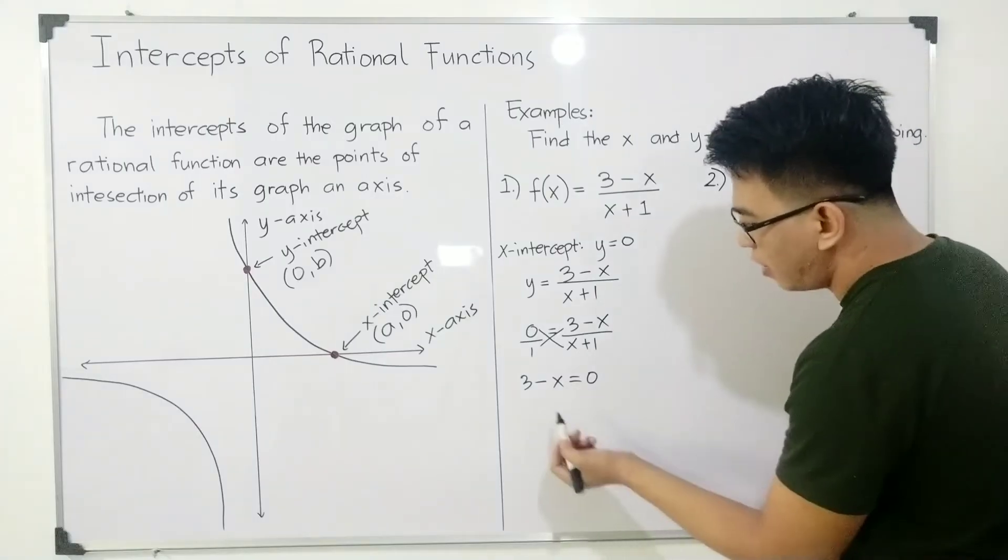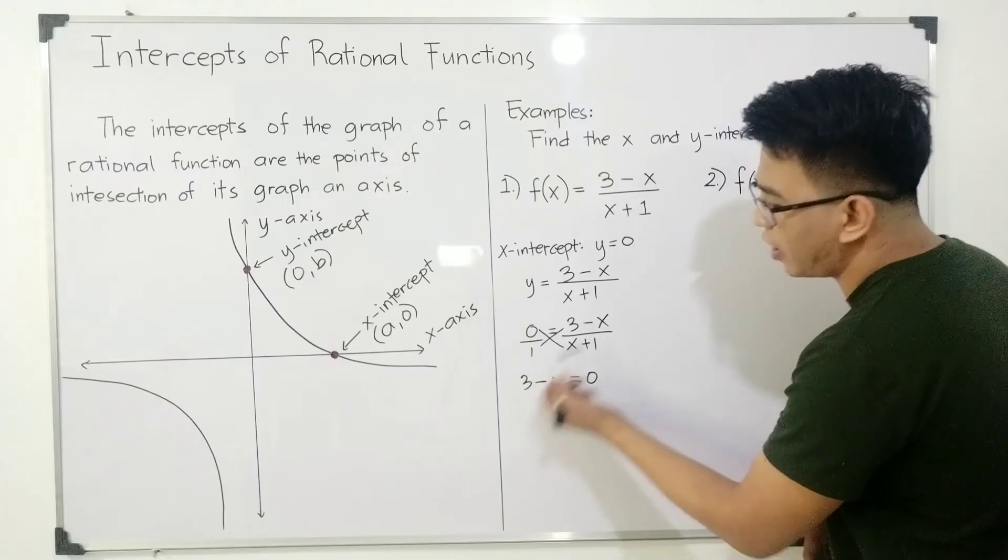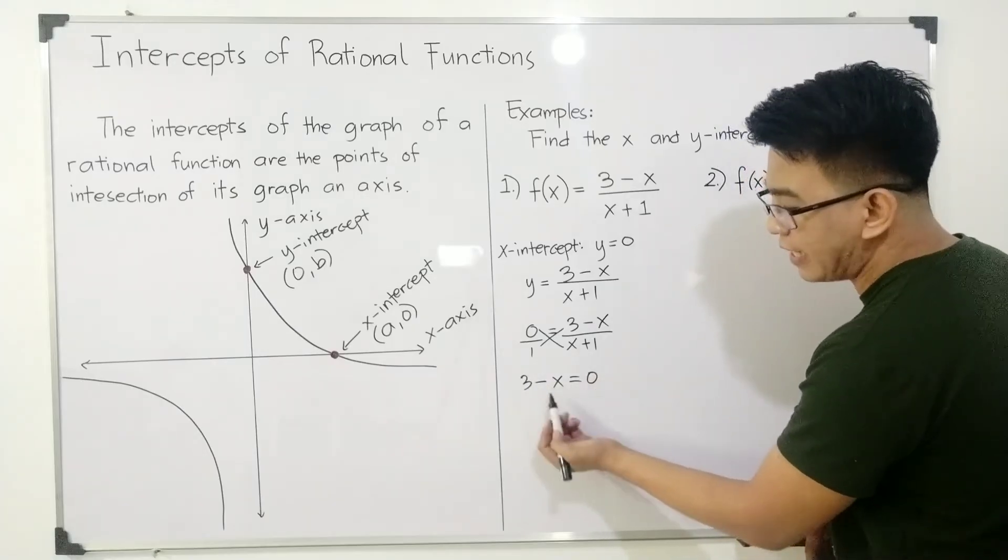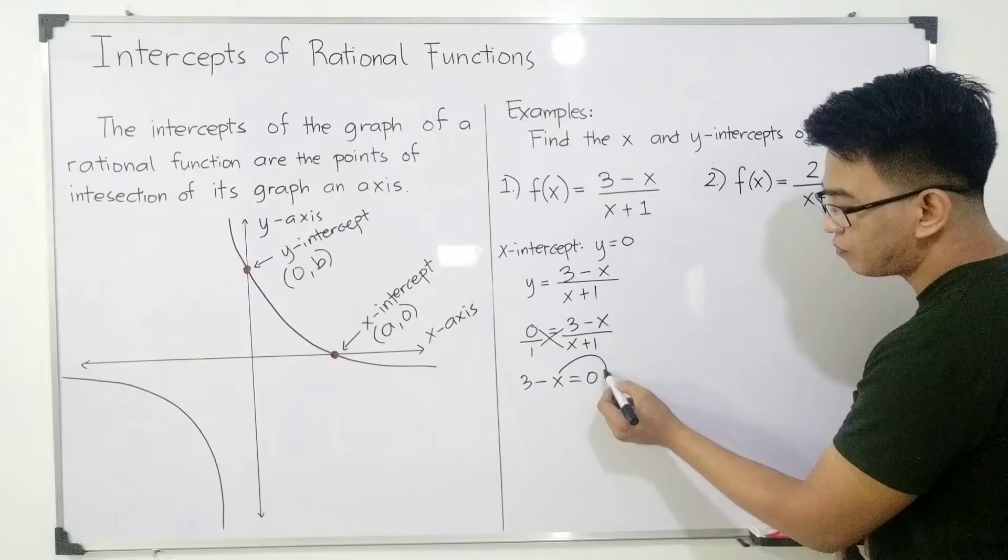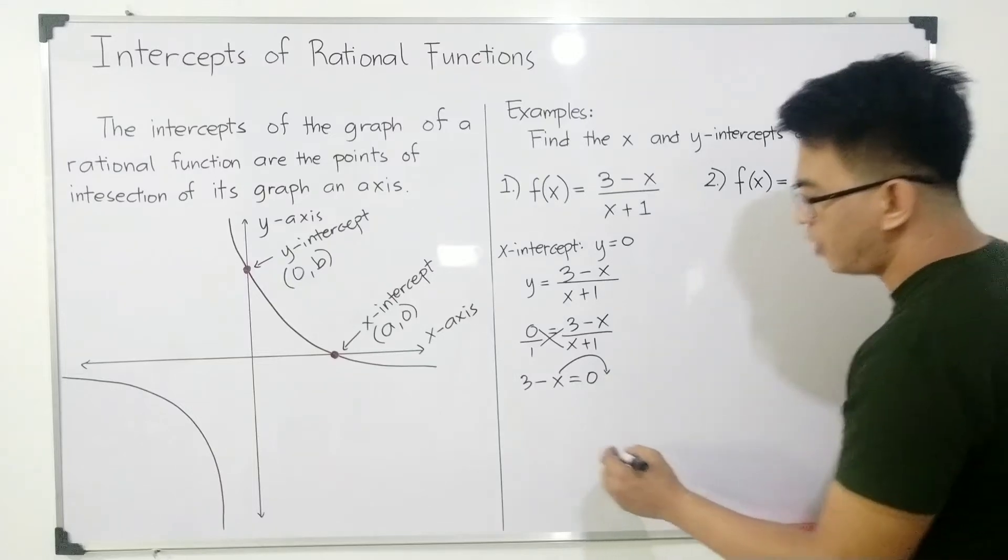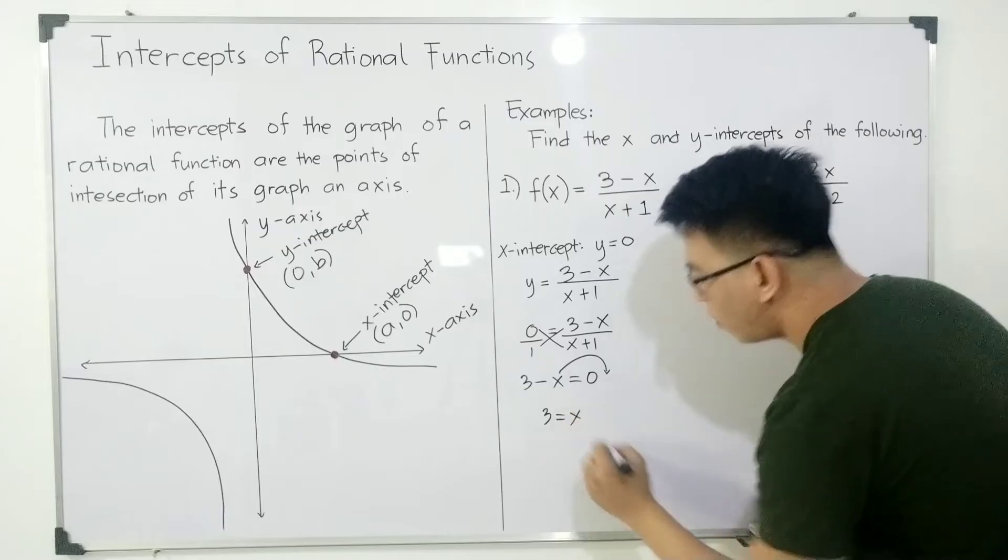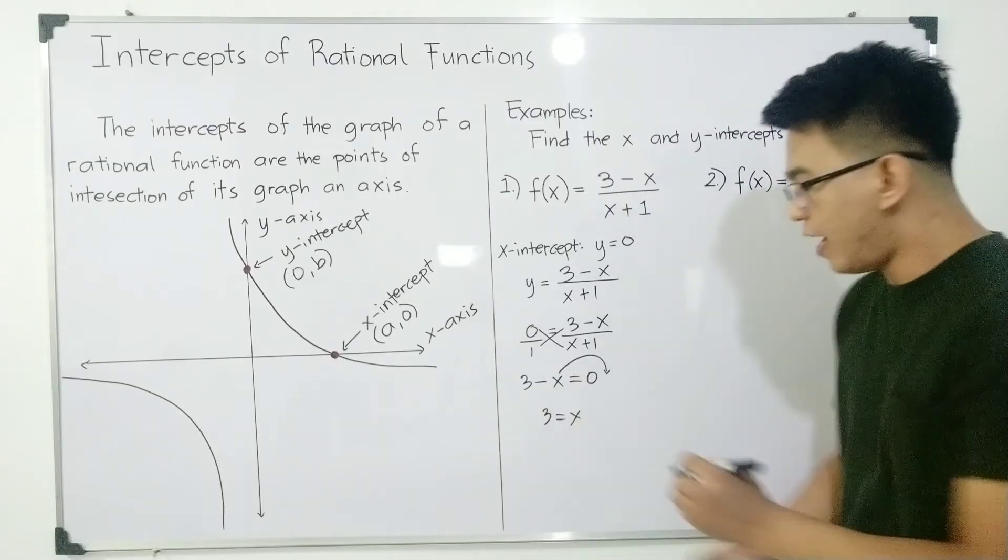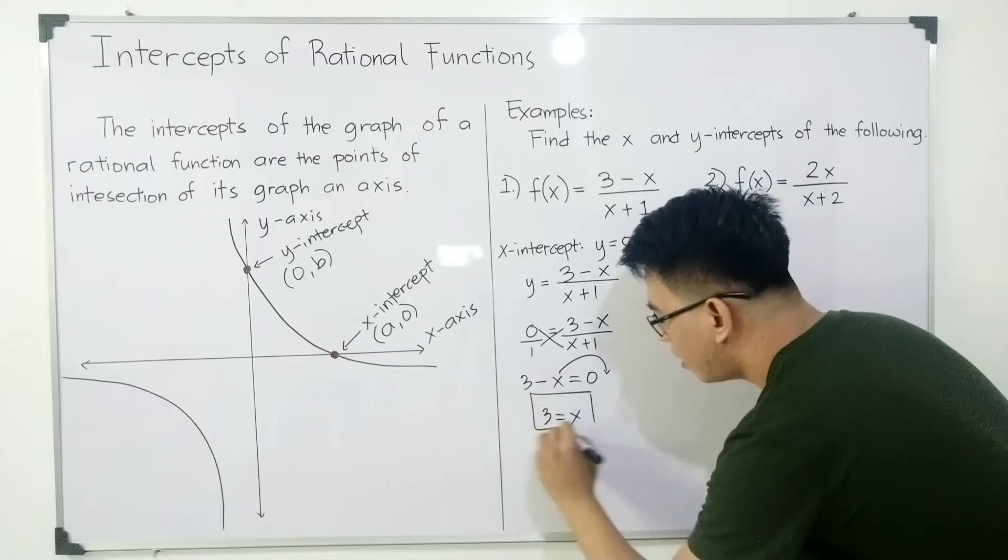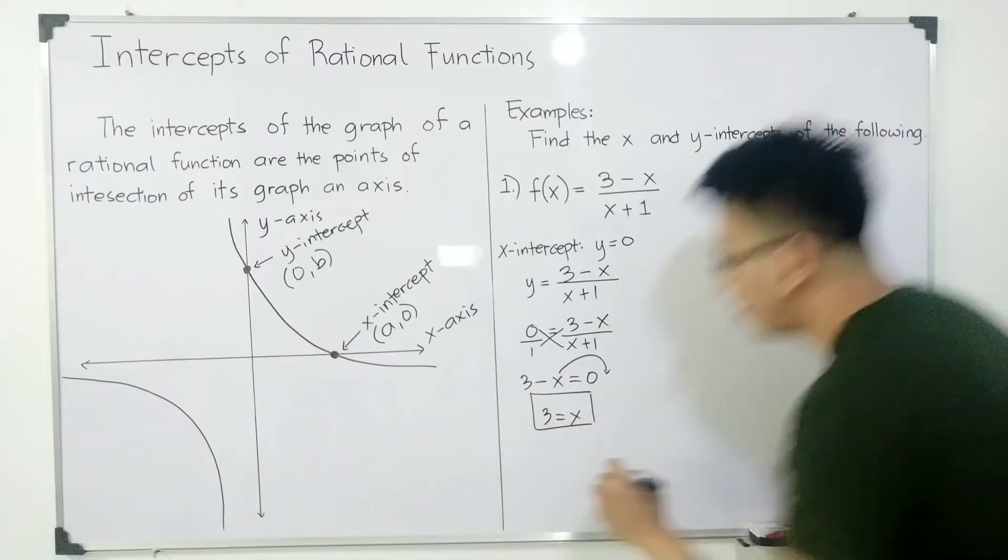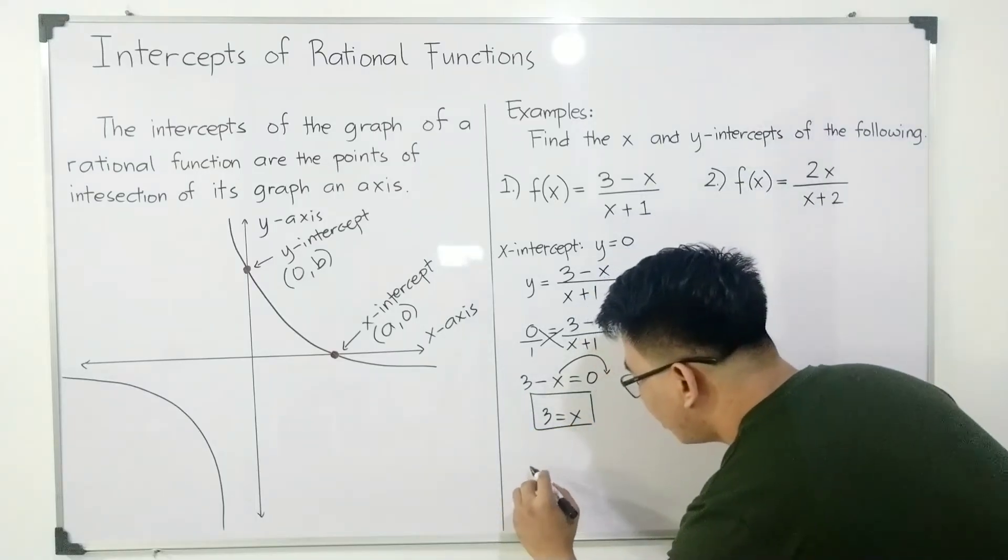Now, to solve for x, instead of transposing 3 to the other side, I will just transpose negative x to the other side. So we have now 3 = x or your x is equal to 3. This means guys that our x-intercept is equal to 3.